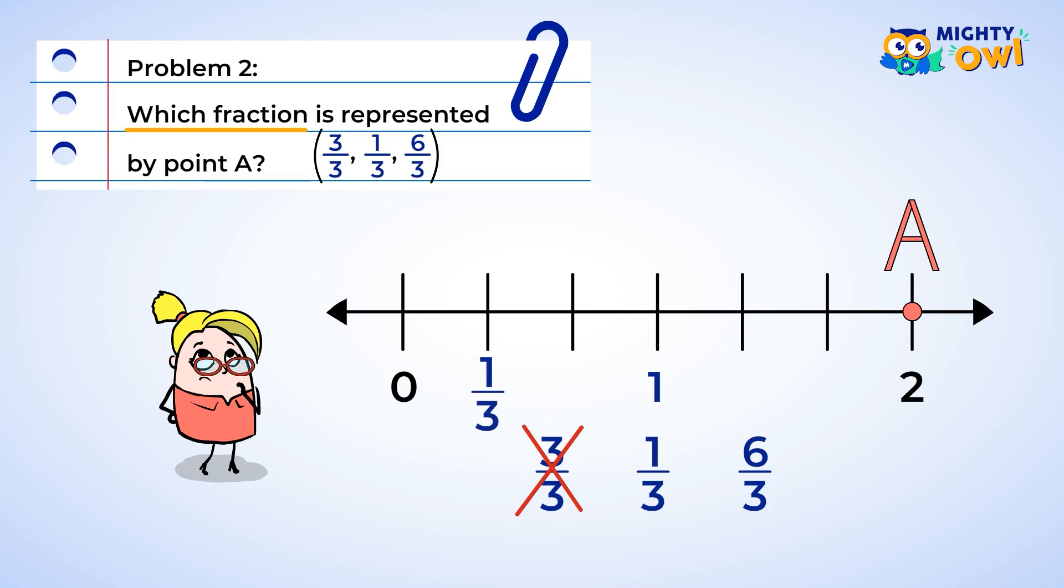Next, we have one-third. This fraction means that only one section out of three are shaded. If it were a box, the whole box wouldn't be shaded. That is less than one whole.